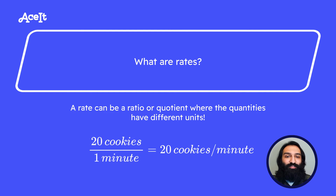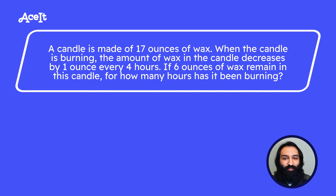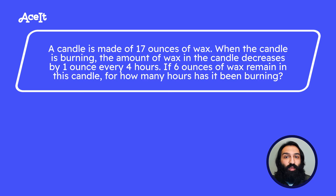Let's practice using rates in a problem. A candle is made up of 17 ounces of wax. When the candle is burning, the amount of wax decreases by 1 ounce every 4 hours. If 6 ounces of wax remain in this candle, for how many hours has it been burning?